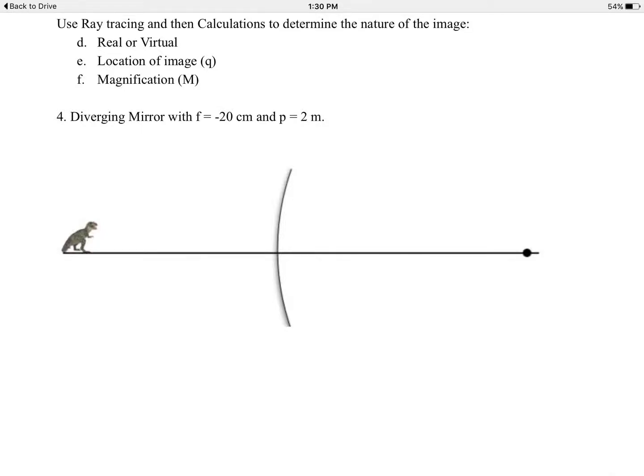Day 121, Honors Physics, ray tracing example number four. Here we have a diverging mirror. Once again, we will work from left to right, but instead of using a candle this time, I'm going to use a Tyrannosaurus Rex as my object.